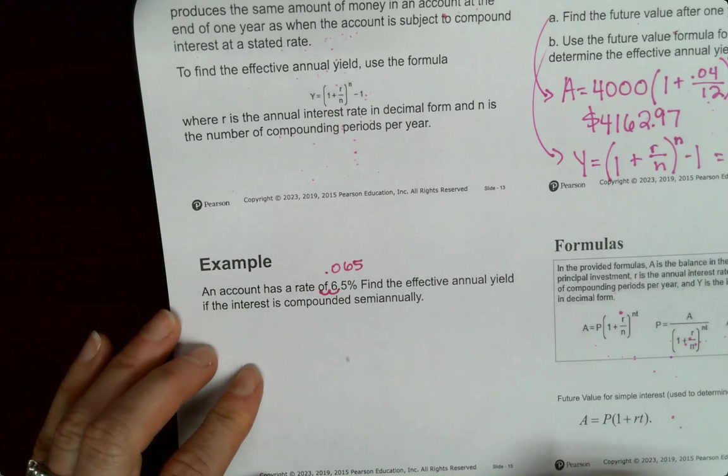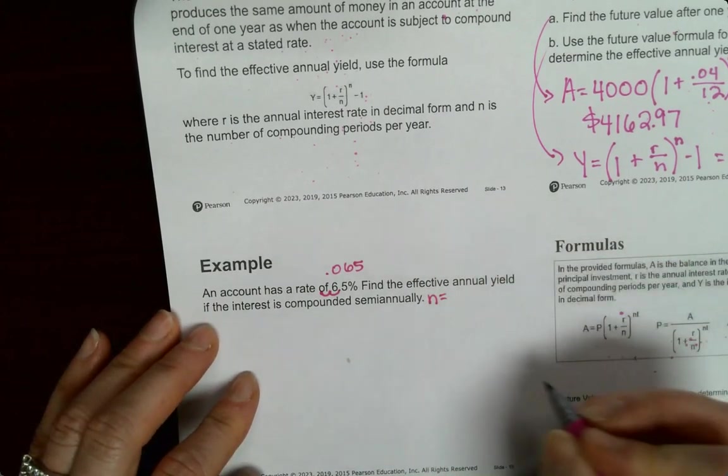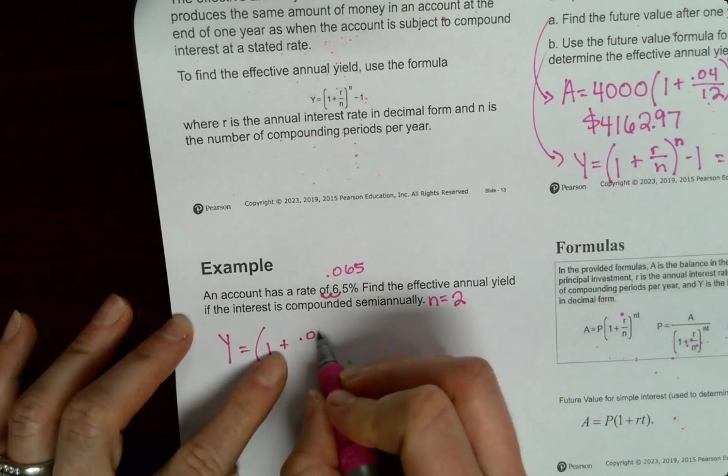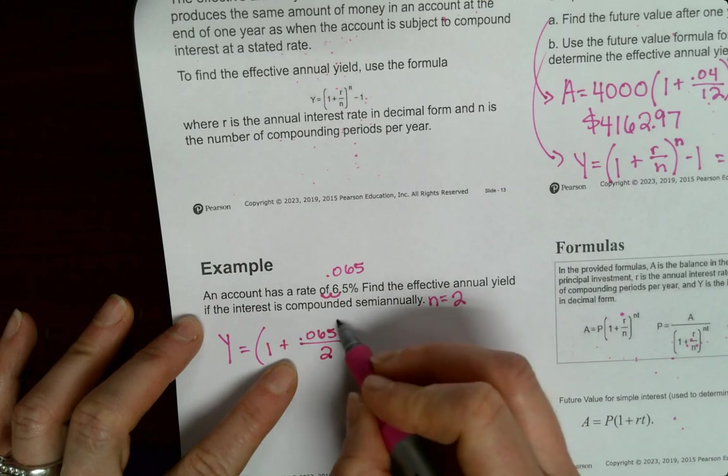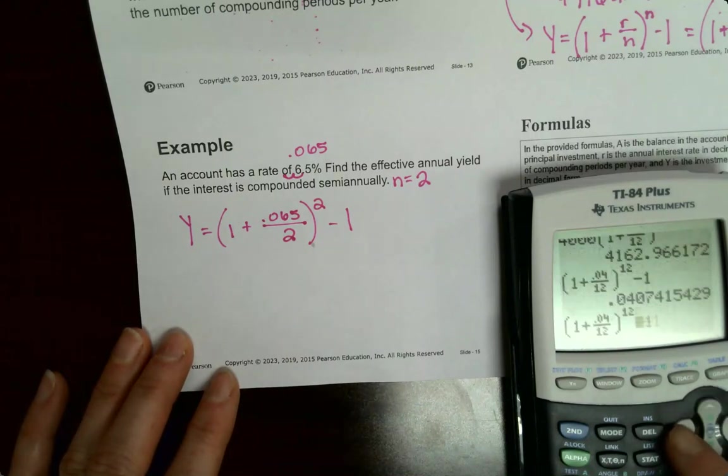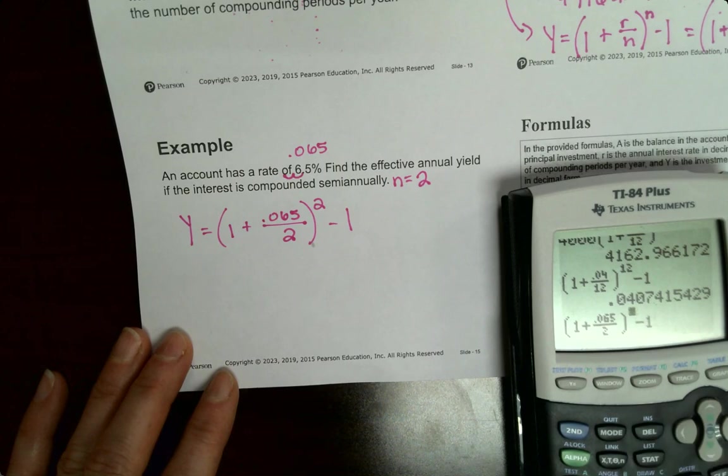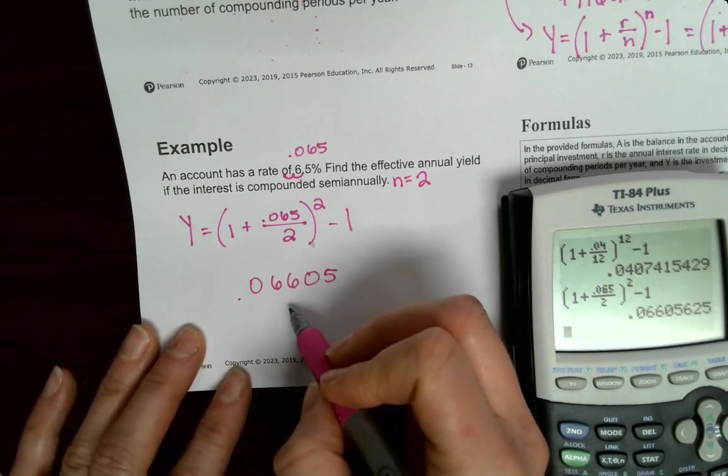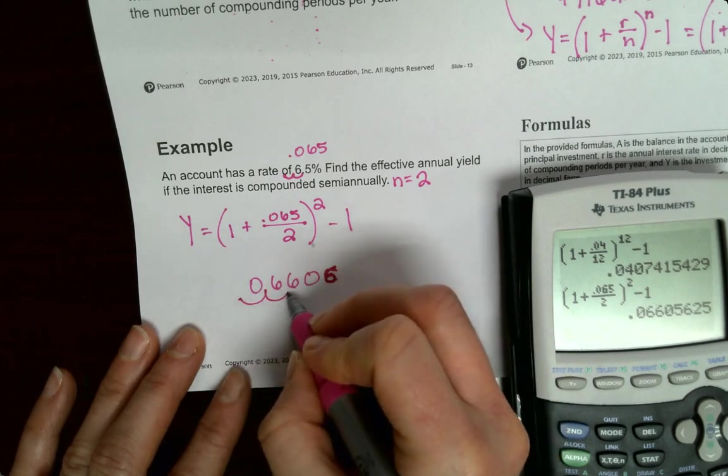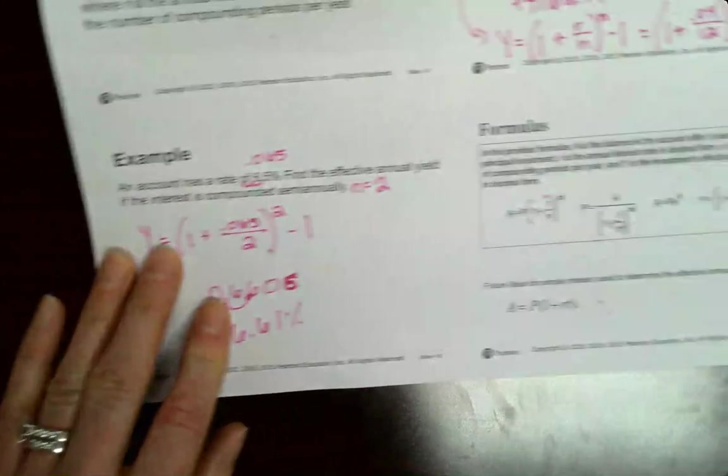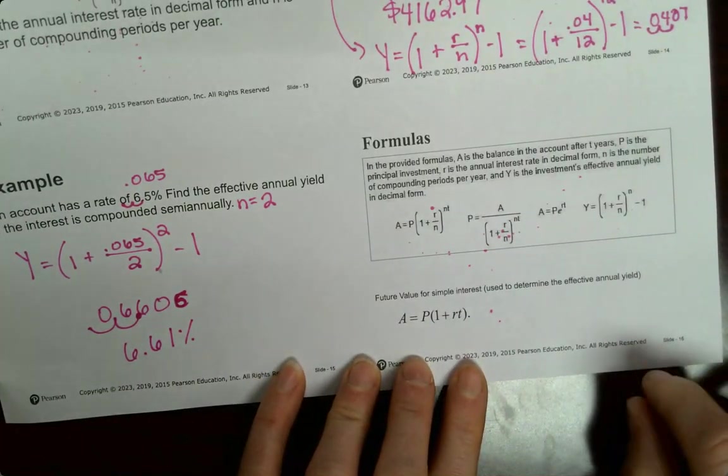The account has a rate of 6.5%, so let's move it over, 0.065. Find the effective annual yield if the interest is compounded semi-annually. So yield is (1 + 0.065/2)^2 minus 1. I'm going to just go in here and change it. 0.0660 or 0.066. So let's just go 1, 2, 6.6%. And if I go to this one, 6.61%.